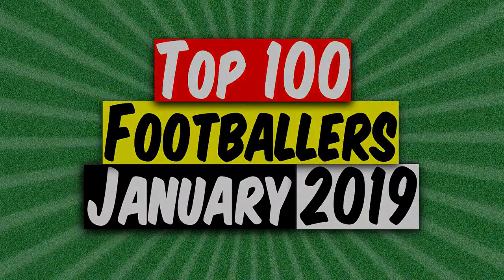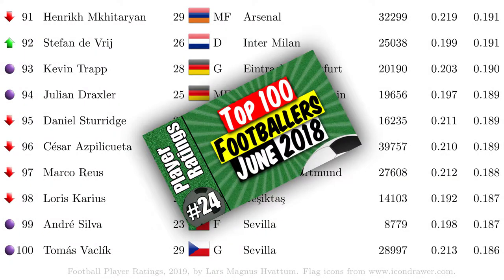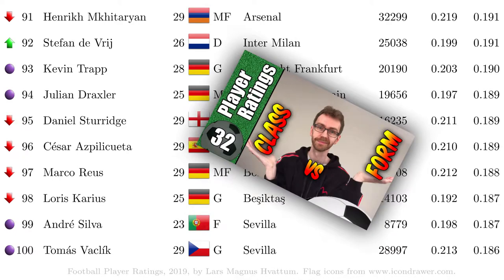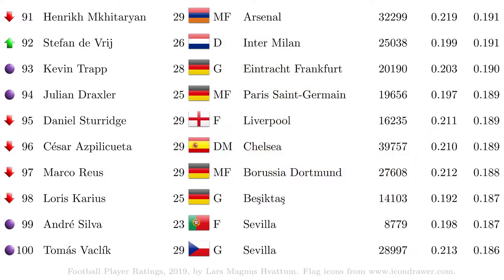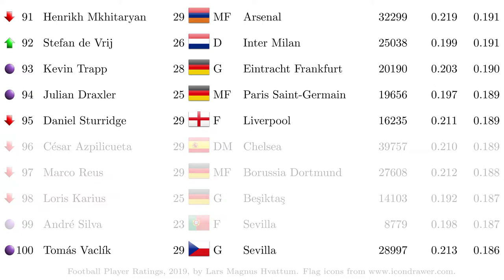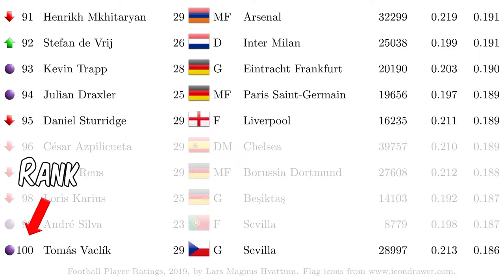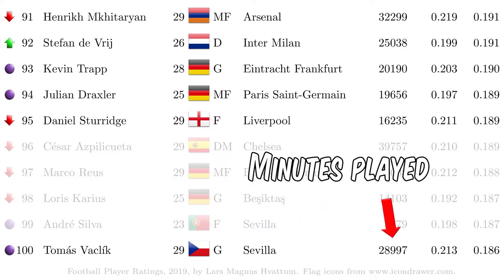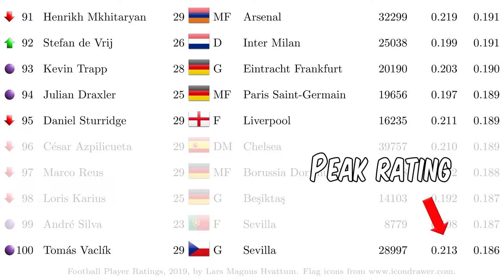Let's look at the list already! It has been around half a year since the previous top 100 list was published. We have made few adjustments to the rating system since then, but some with the potential of changing the rankings. In addition, new matches have been played and the players have aged, which changes their rating estimates. A new feature of the list is that we indicate the change in position since the last list, where the purple dot indicates new entries to the top 100. The information given includes rank, name, age, nationality, position, current club, minutes played in the database, estimated peak rating, and estimated current rating.